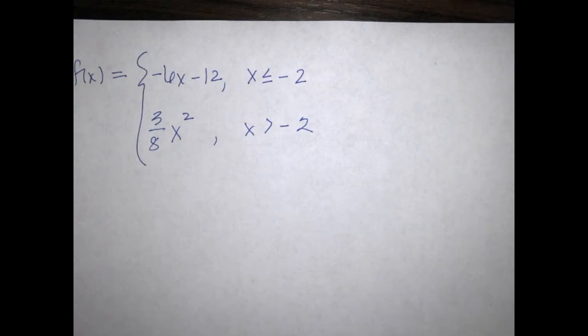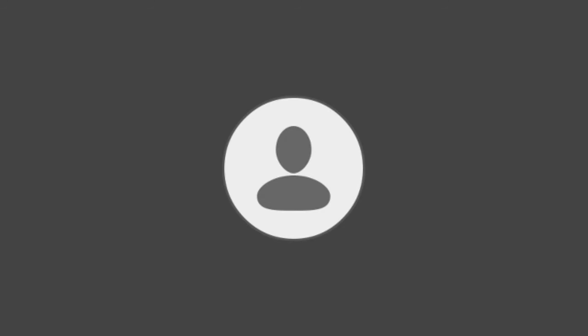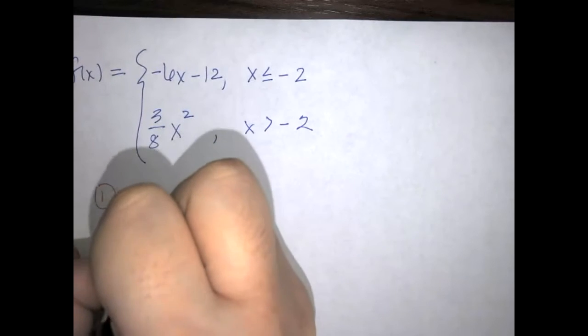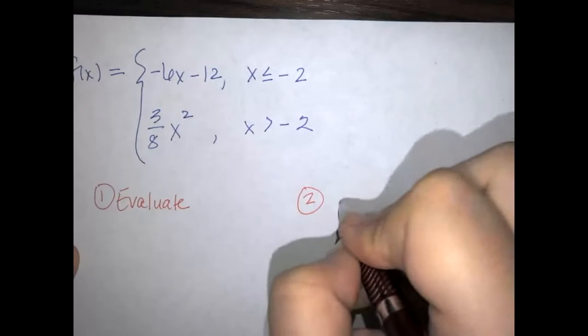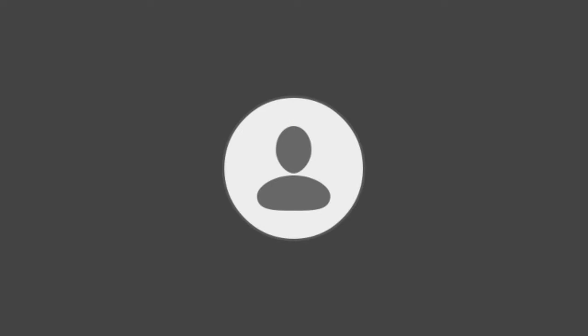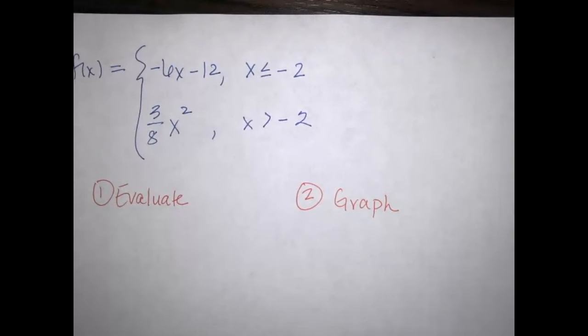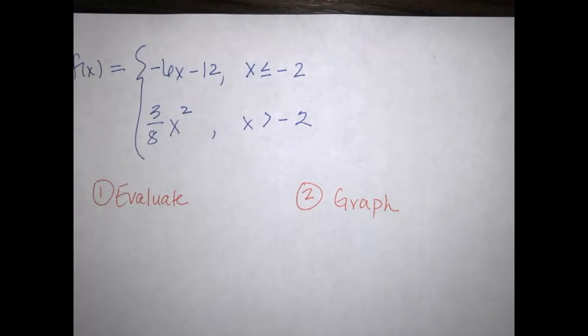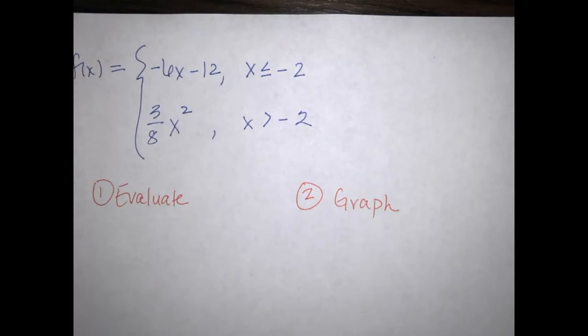With piecewise functions there are two different things we can do: we can evaluate them, and we can graph them. Both ideas use the same basic concept — you have to know what your bound is for each piece. Looking at the top piece, the linear line can only use x values that fall within its bounding value.